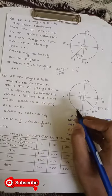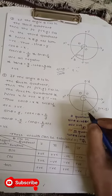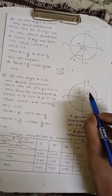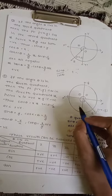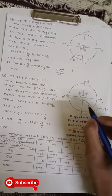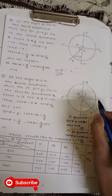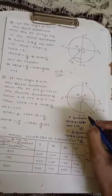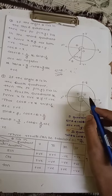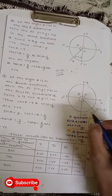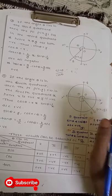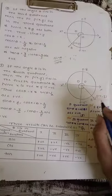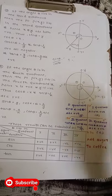Then tan θ = sin θ / cos θ: sin θ is negative and cos θ is positive, so tan θ is negative. And cot θ = cos θ / sin θ: cos θ is positive and sin θ is negative, so cot θ is also negative.